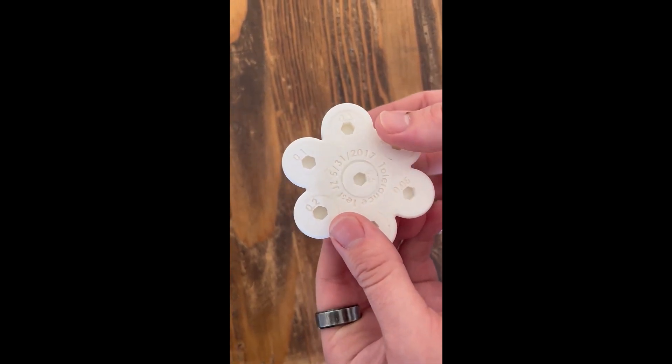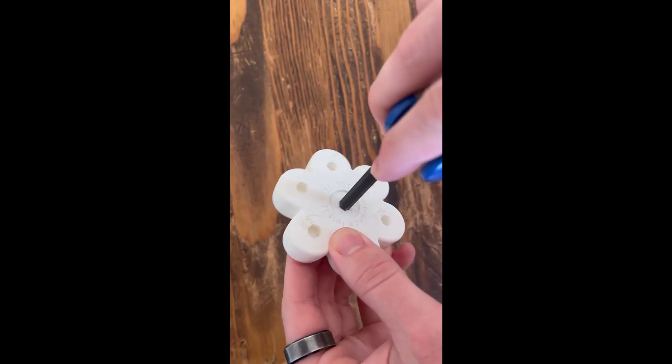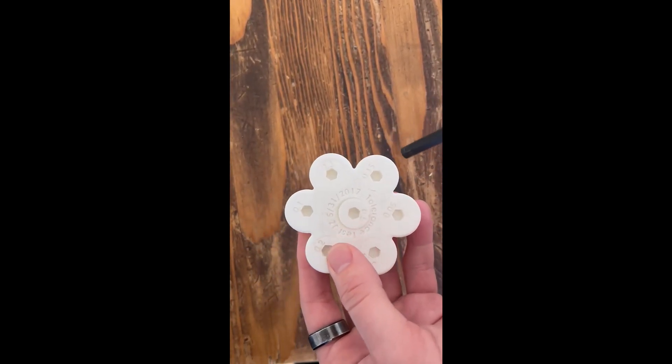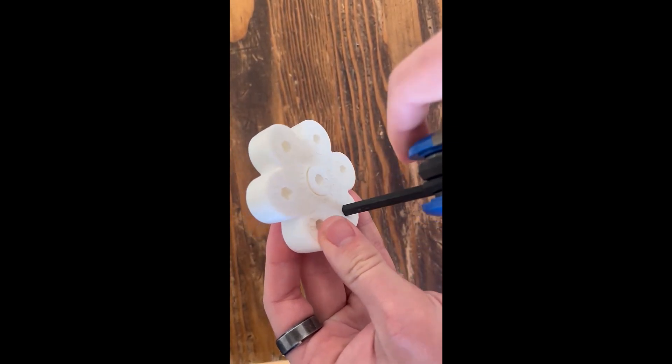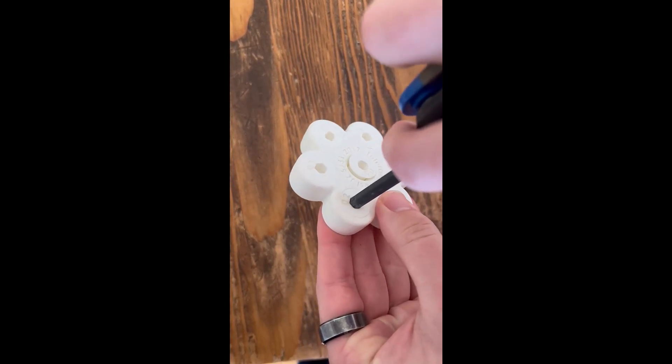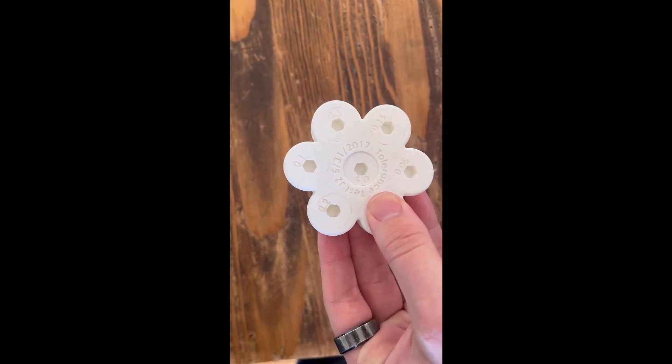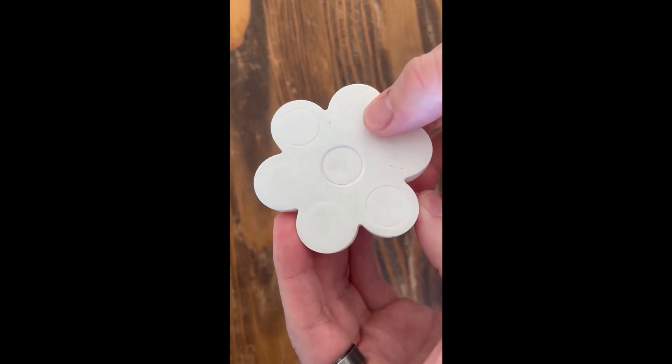As I turn each key, we'll notice that some spin easily since it has a larger fit tolerance like the 0.5 millimeter. Some turn slower and have a more snug fit like the 0.25 millimeter hole. Lastly, I can see that some don't turn at all and the 0.2 millimeter hole is the largest number that will not turn.